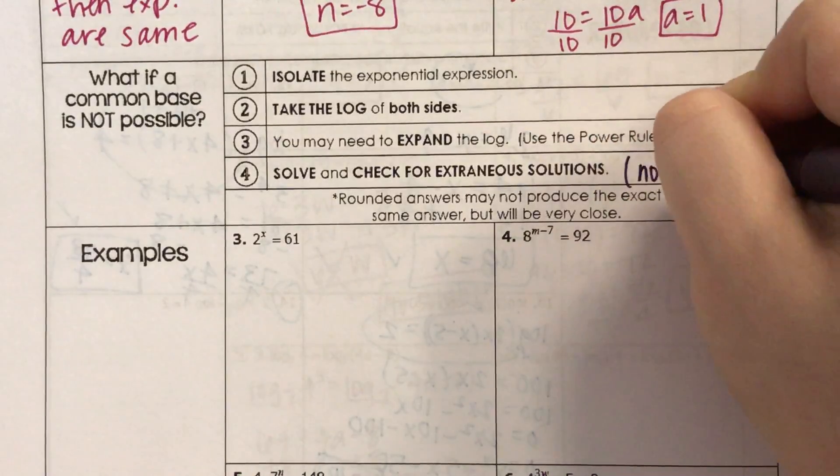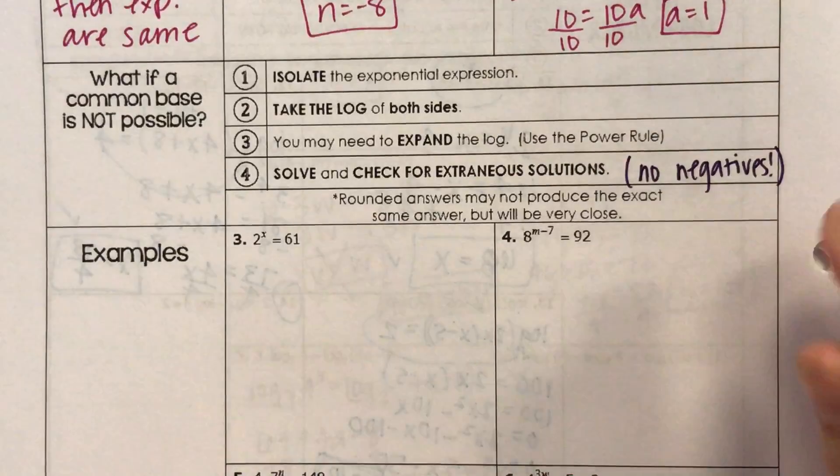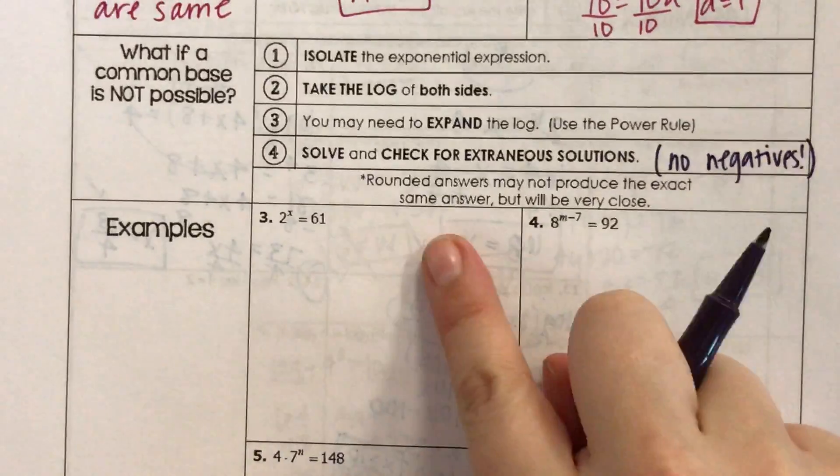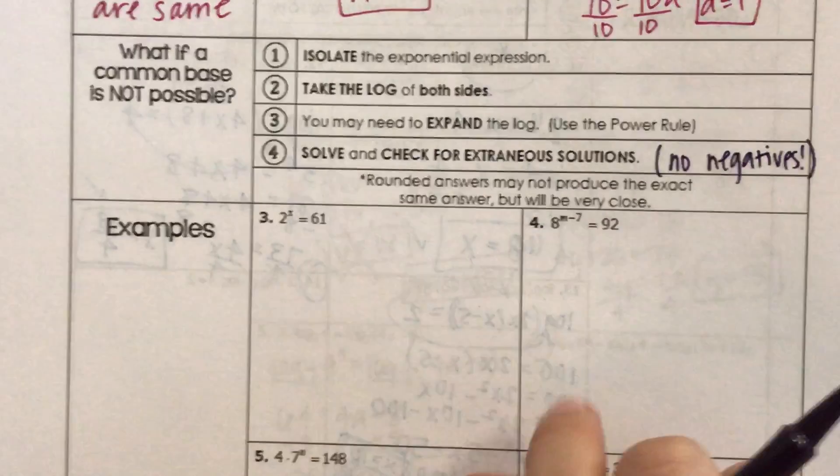Remember, no negatives. Negatives are no-no. Well okay, rounded answers might not produce the exact same answer, but will be very close. It's okay if you round.